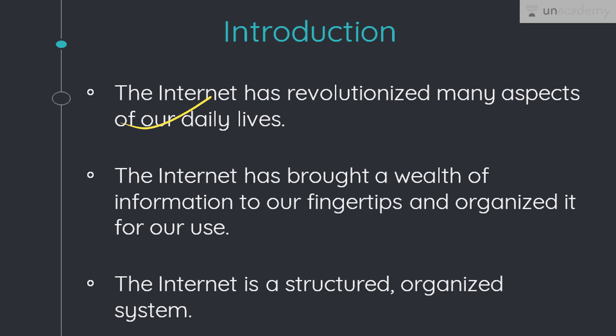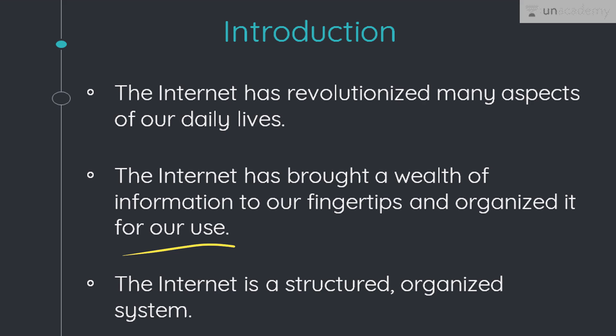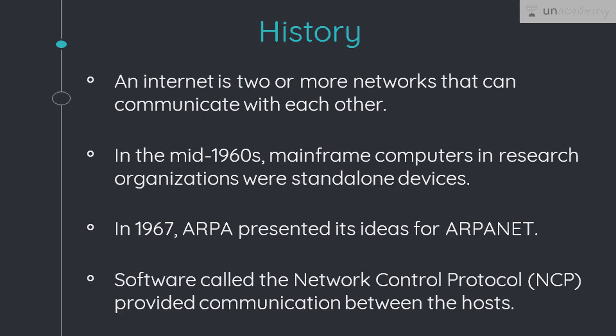Or maybe you researched a medical topic, booked a hotel reservation through apps like Make My Trip, chatted with a friend, or comparison-shopped for a car — everything done using the internet. The internet is a communication system that has brought a wealth of information to our fingertips and organized it for our use. So we can say that the internet is a structured, organized system. A network is a group of connected communicating devices such as computers and printers, and the internet is two or more networks that can communicate with each other — a collaboration of more than hundreds of thousands of interconnected networks used by private individuals, government agencies, schools, research facilities, corporations, and libraries in more than 100 countries.